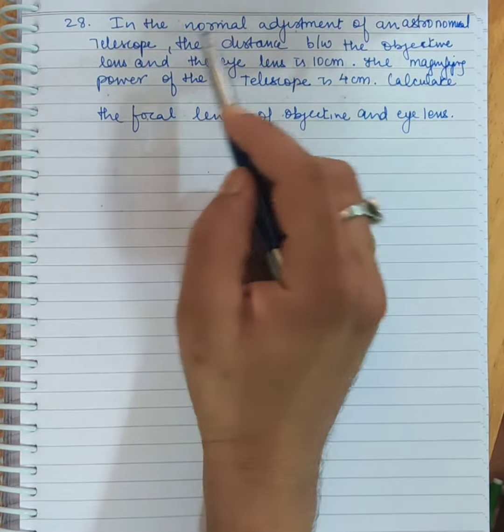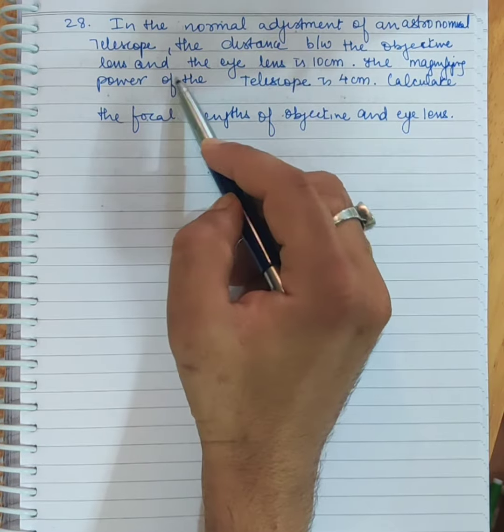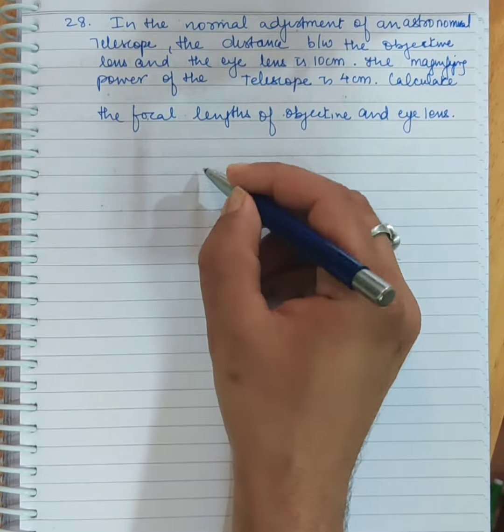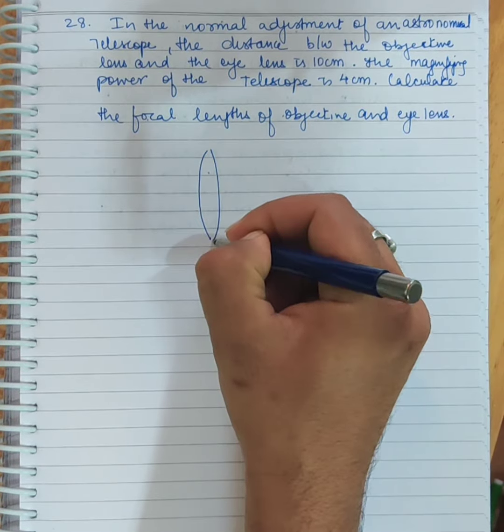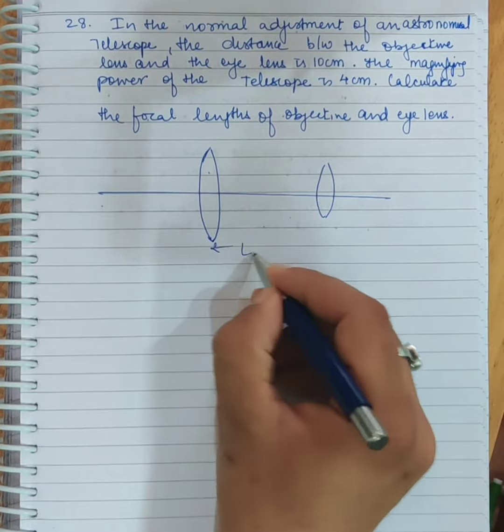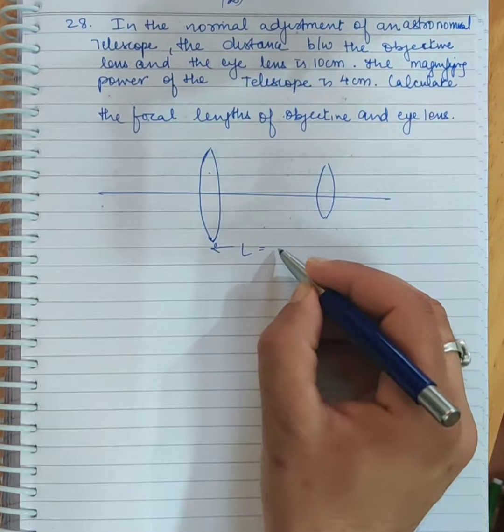In the normal adjustment of an astronomical telescope, the distance between the objective lens and the eyepiece is 10 cm. The telescope distance between the objective and the eyepiece in normal adjustment, or in the infinity case, is 10.